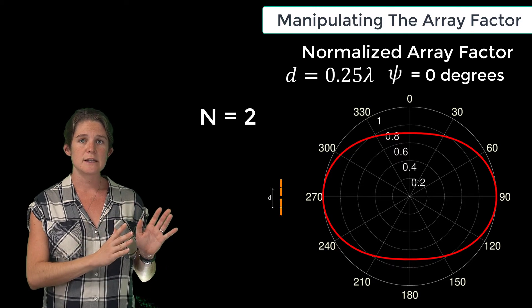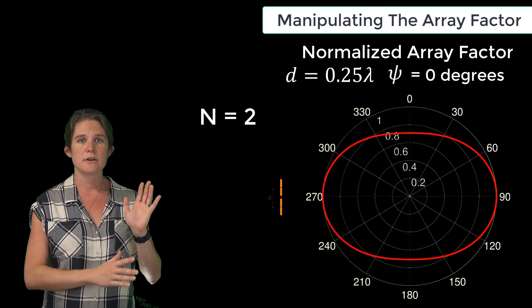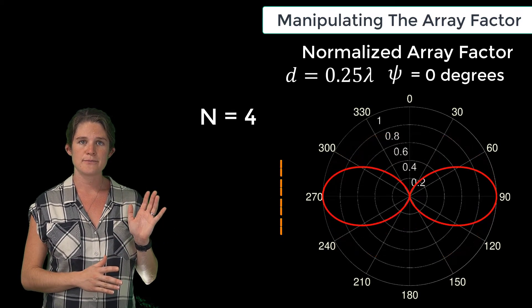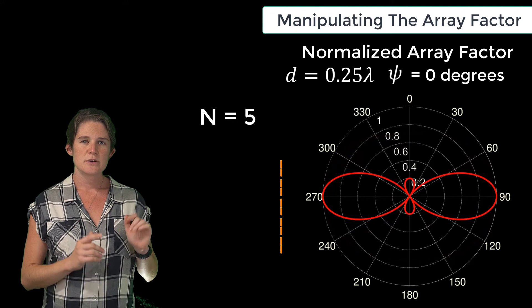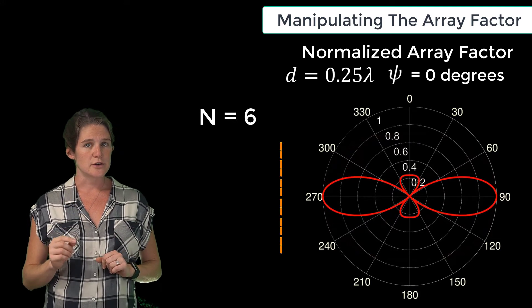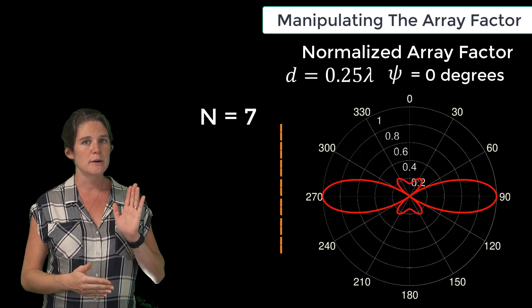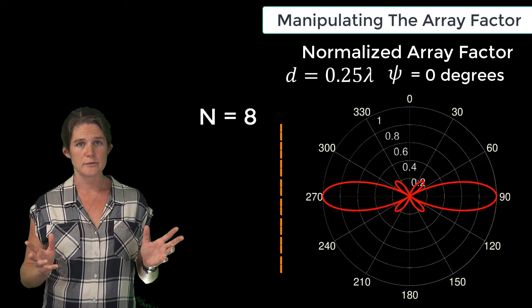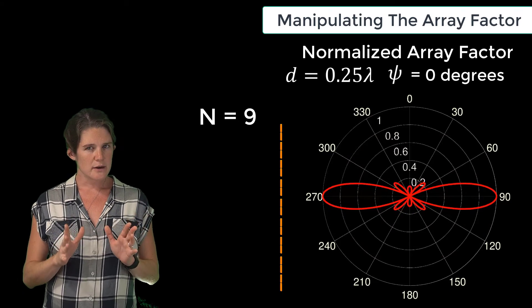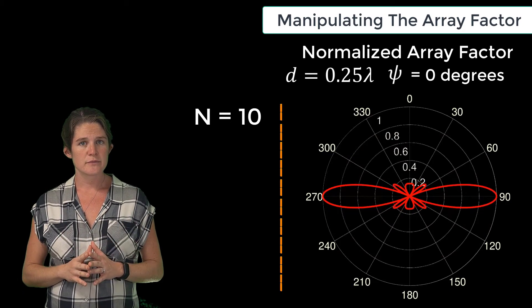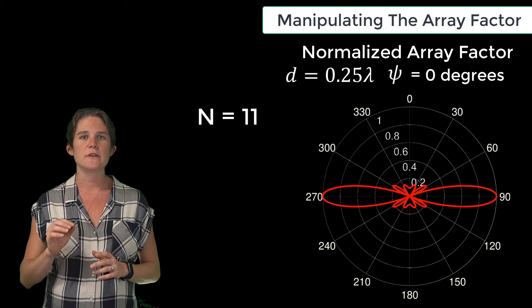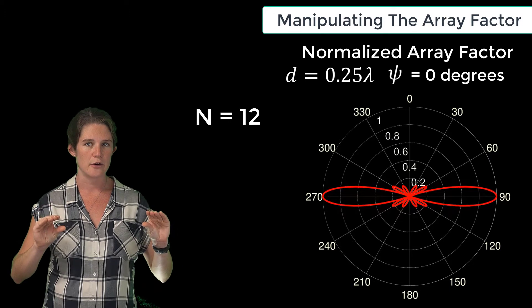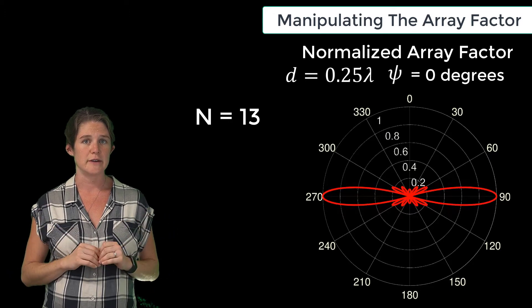Here is the effect of increasing the number of elements. You can see that in this case also, above a certain number of elements, we start to see side lobes, but here the side lobes are quite small. You may also note that the primary lobes are very narrow compared to the previous case.